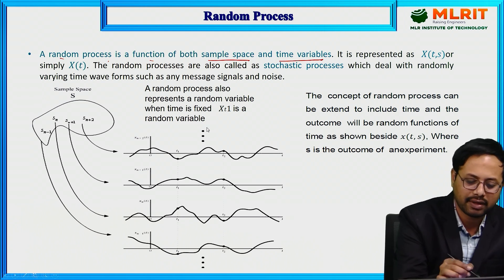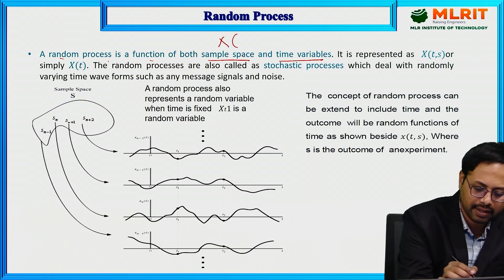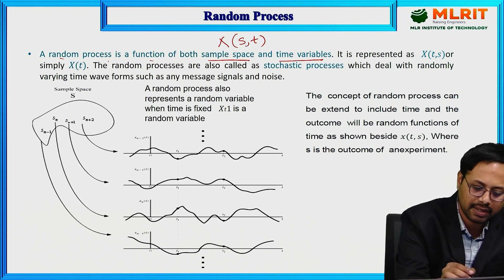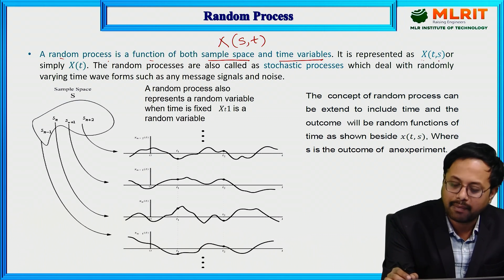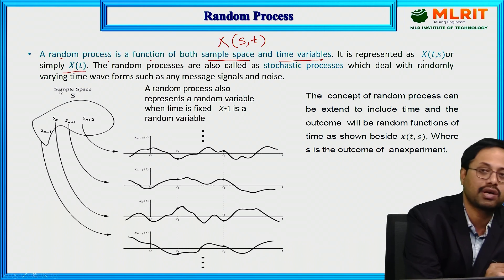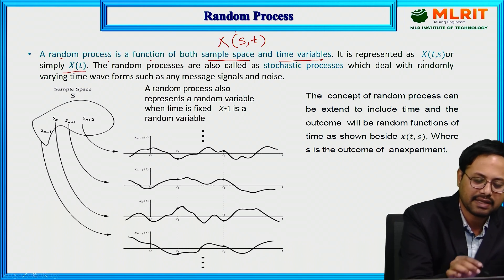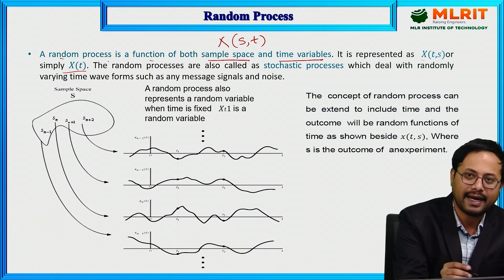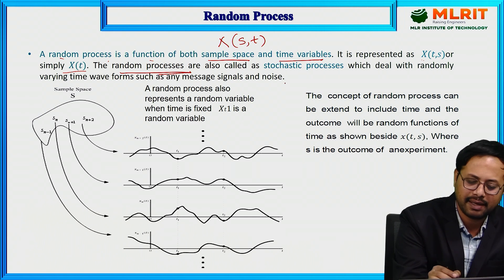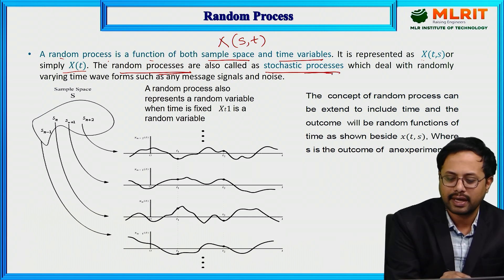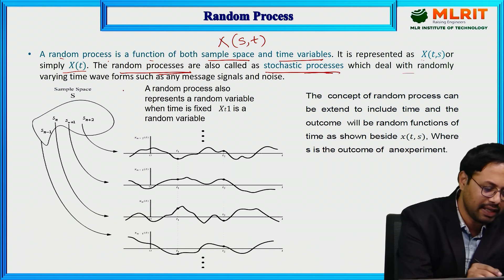In a random variable, X is a function of only the sample space, whereas a random process is a function of both sample space and time. It is represented as X(t, s), where t is time and s is the sample space. Simply put, a random variable that is also a function of time is called a random process. This random process is also called a stochastic process, which deals with randomly varying time.